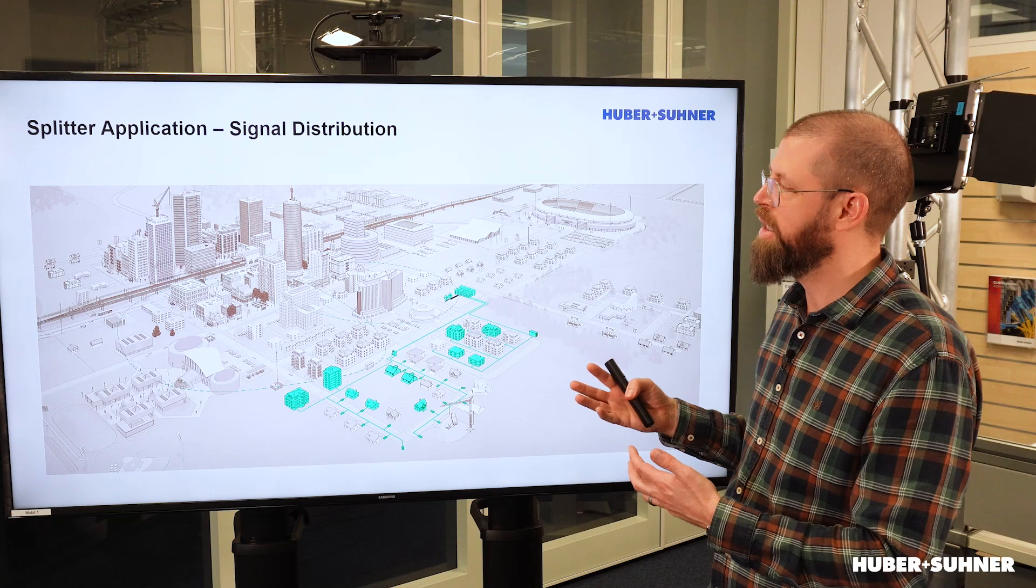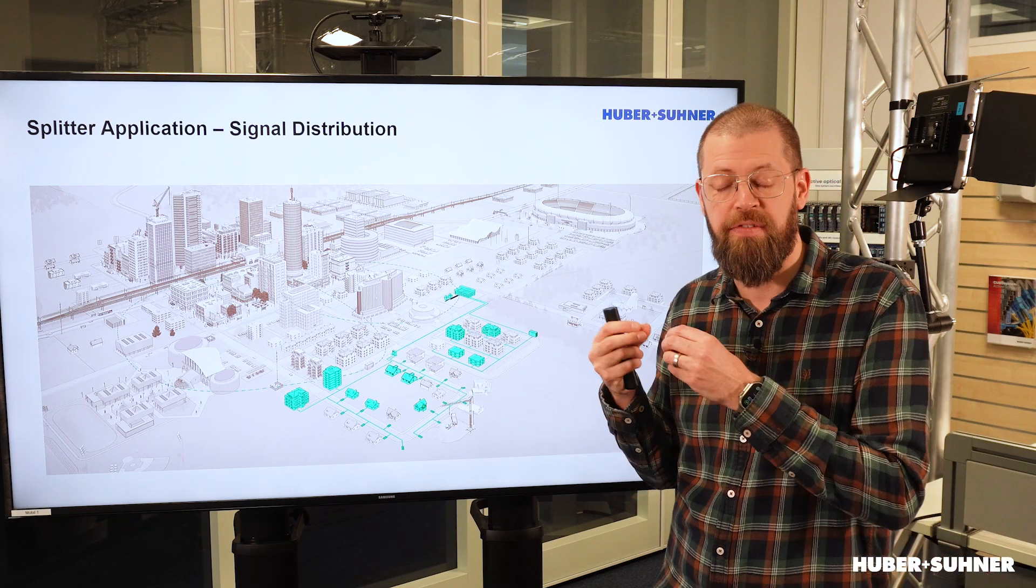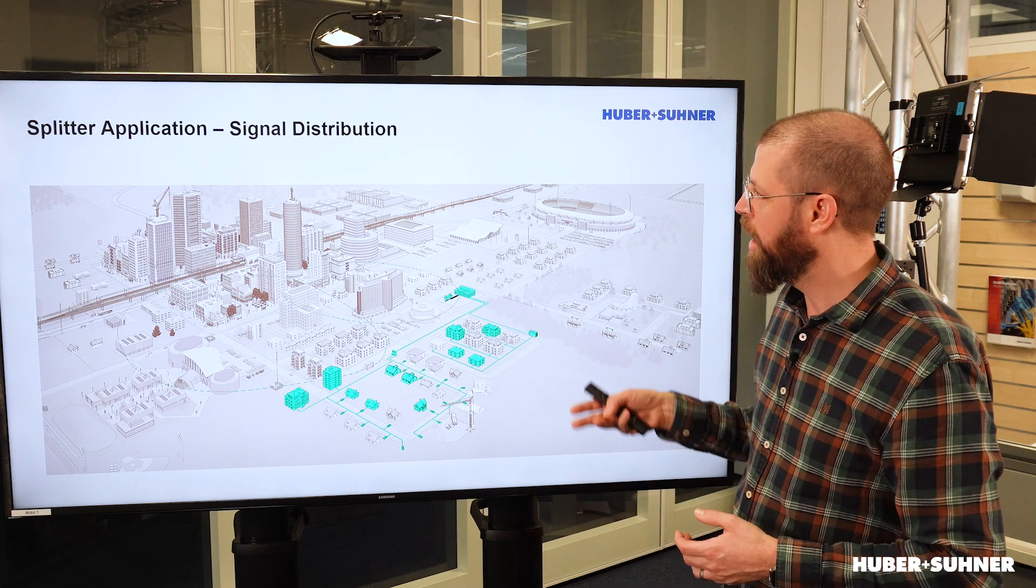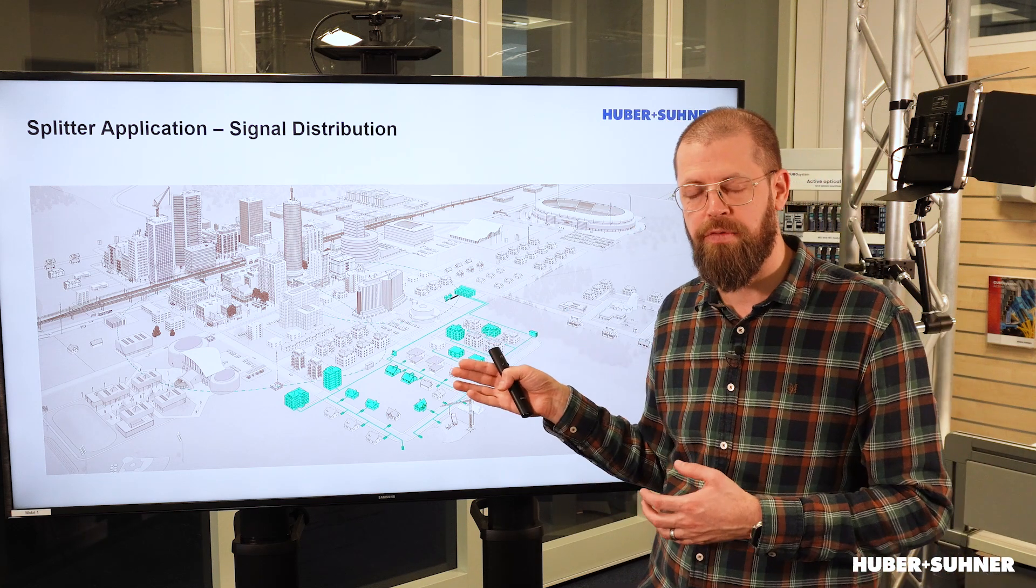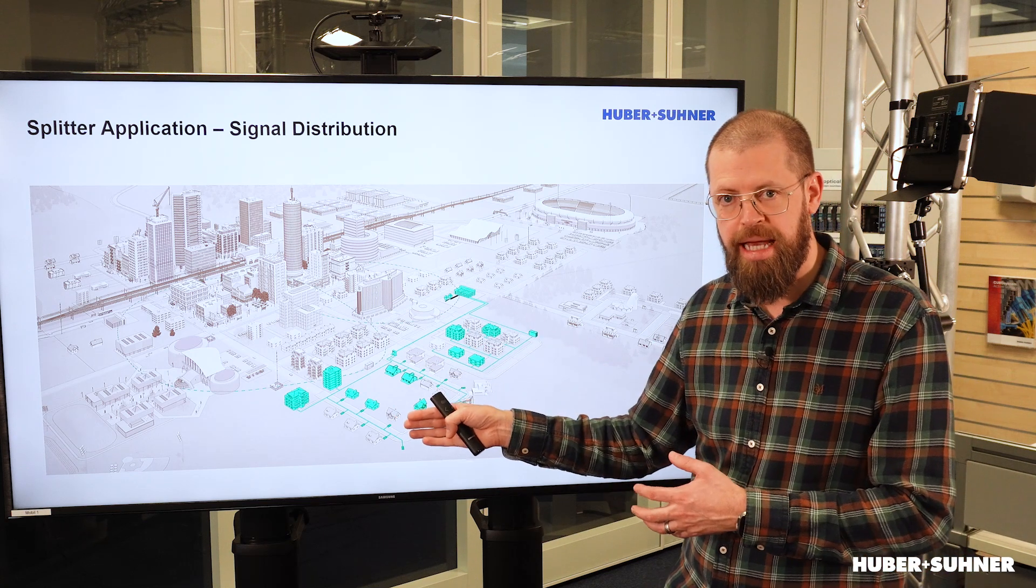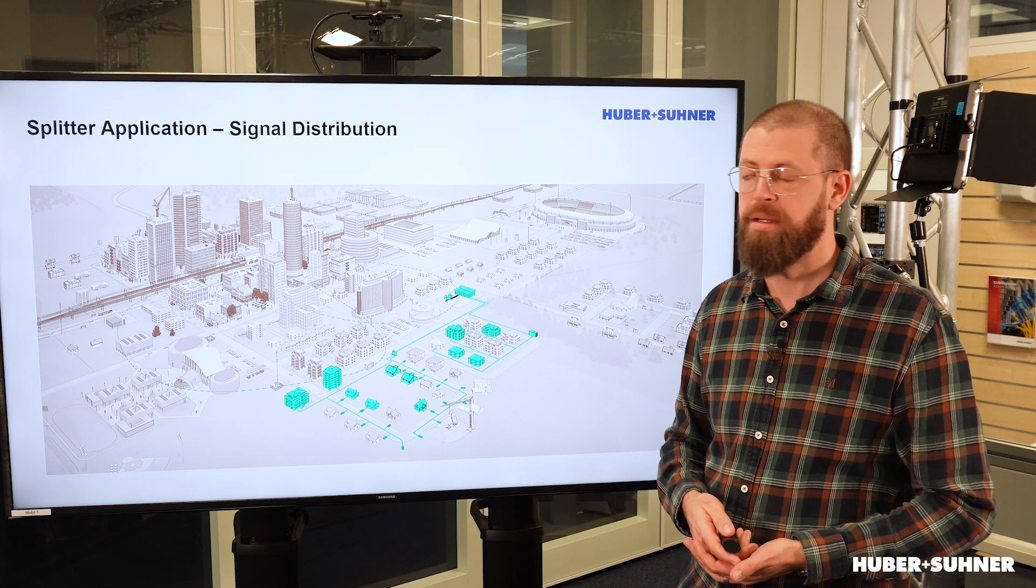Now, from an application point of view, since the splitters are such a nice, very cost-effective signal distribution solution, they are a lot of times used in the passive optical networks, so the PON networks, very close to the end-user. So we've got it more in the fiber-to-the-home application.